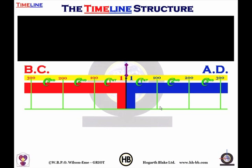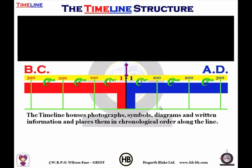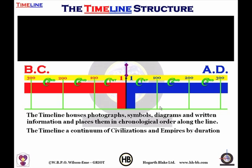The timeline houses photographs, symbols, diagrams and written information and places them in chronological order along the line. The timeline is a continuum of civilizations and empires by duration as colored bars with a start date and a finish date.